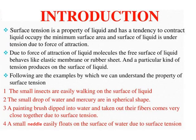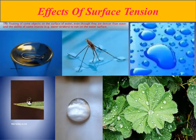A small insect can easily walk on the surface of a liquid. A small drop of water or mercury takes a spherical shape. A small needle can float easily on the surface of water even though it is denser than water.